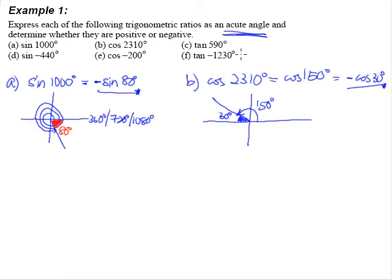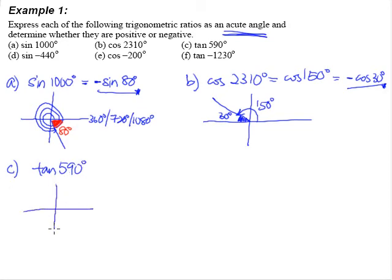Now let's move on to tangent. Part C: tangent 590 degrees. This is less than two rounds because two rounds is 720 degrees, so it's easier to handle.